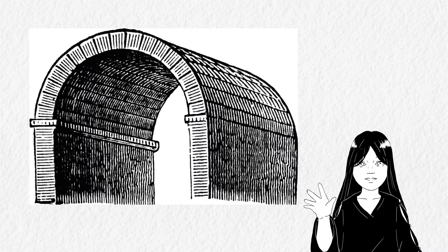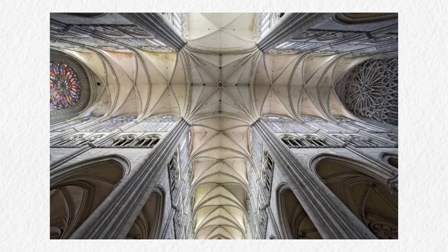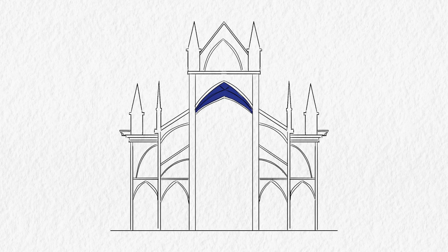Number 4: Rib vaults. The buildings in the Romanesque era did have vaults, but they were barrel vaults and groin vaults. Rib vaults have intersecting ribs that create a grid-like structure. This grid-like structure can support the weight of the ceiling and distribute it evenly to the columns below.